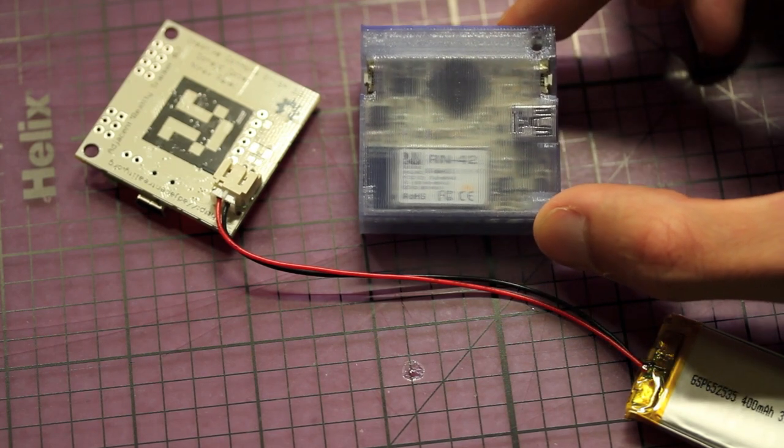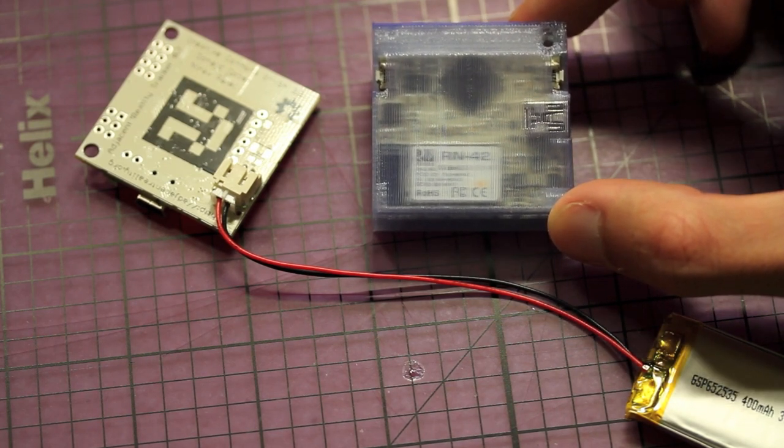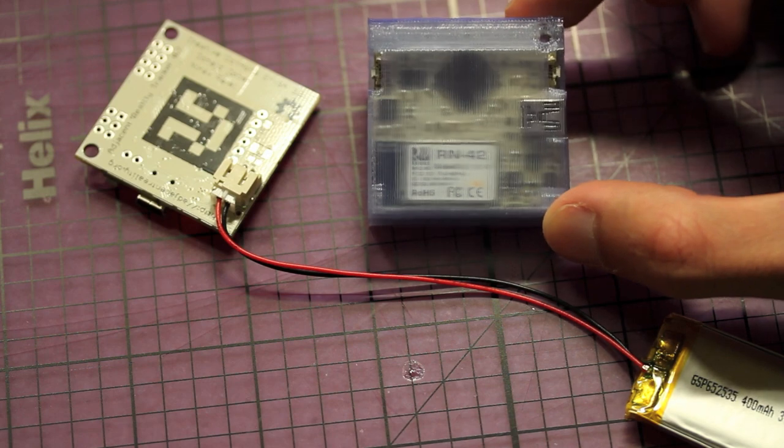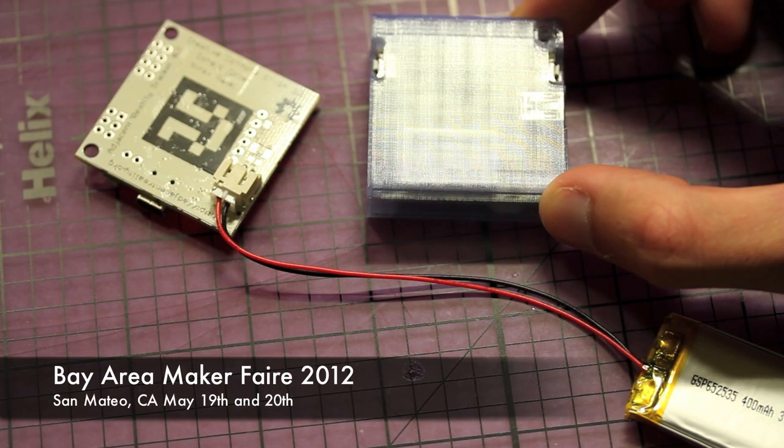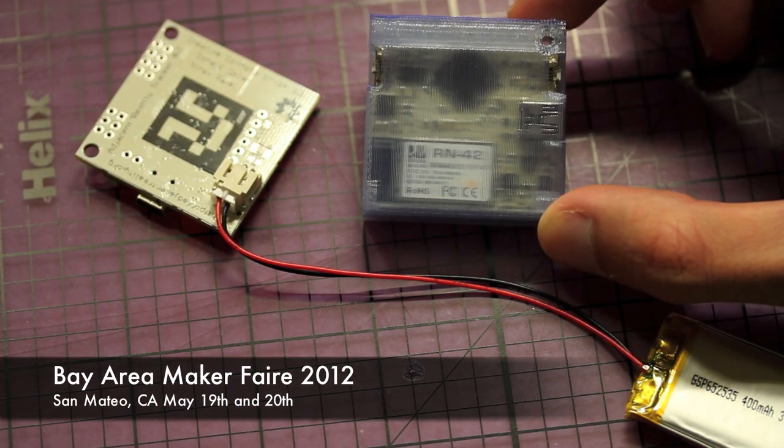Donny and I will also be bringing the Adjacent Reality Tracker, Snowglobe, and some other really cool motion tracking related stuff to the Bay Area Maker Faire this year. We'll be at Fiesta Hall, so check us out there.